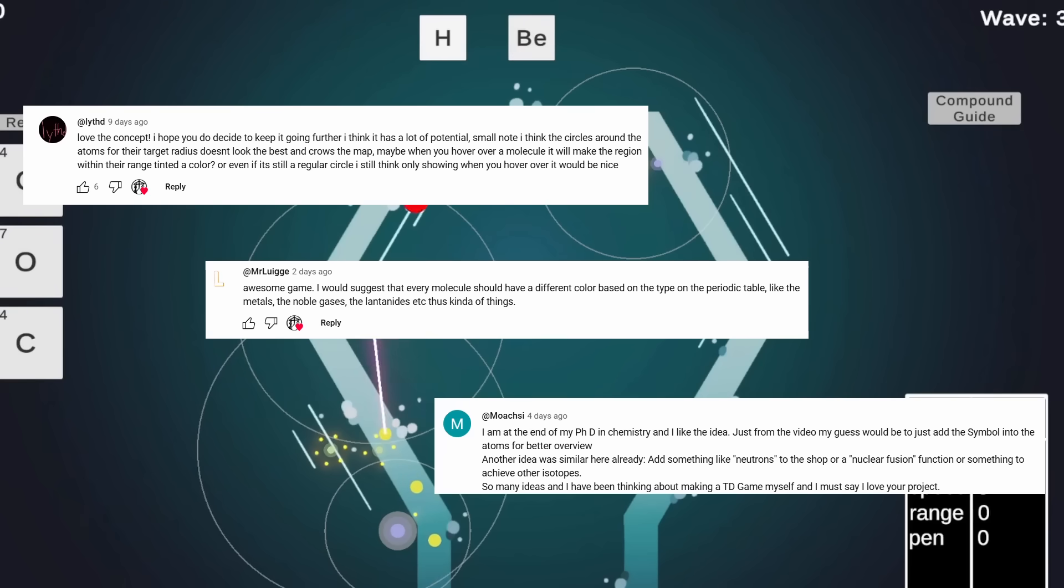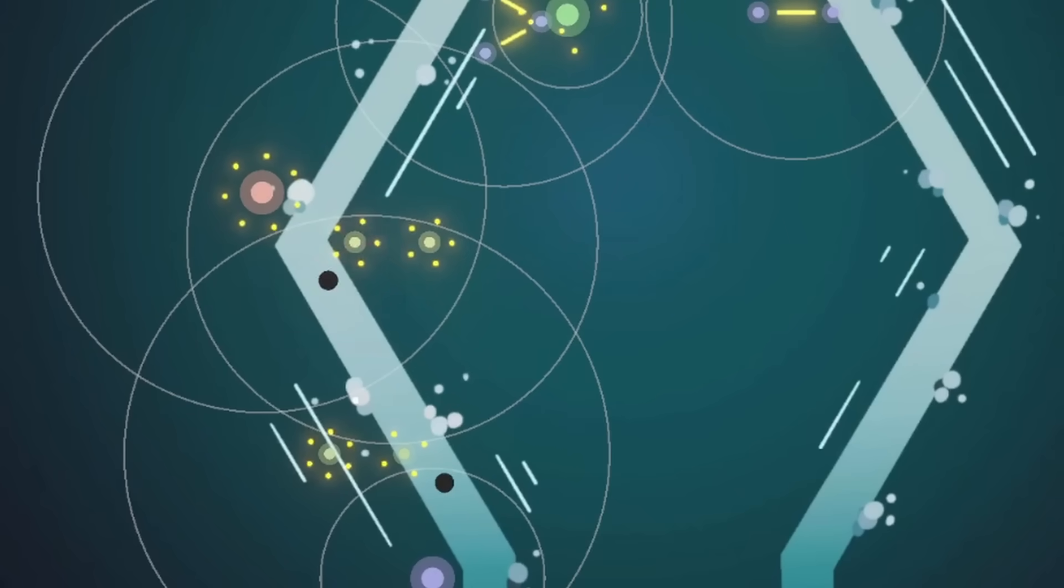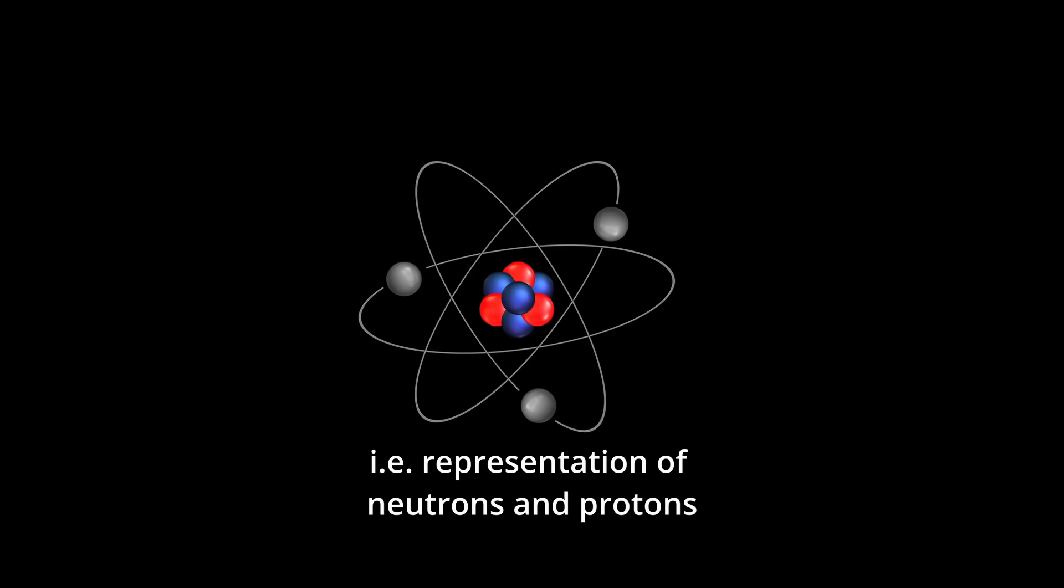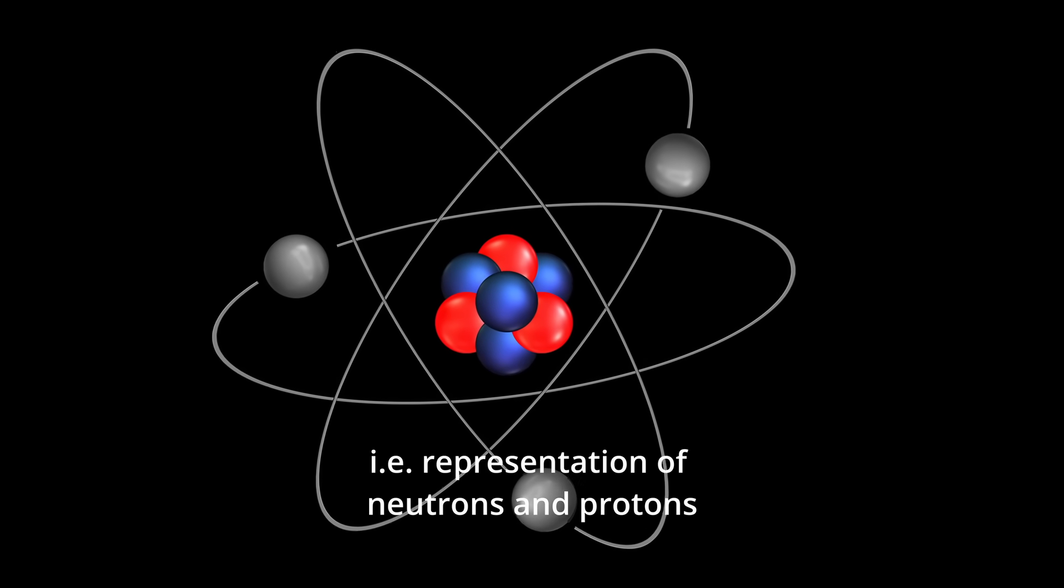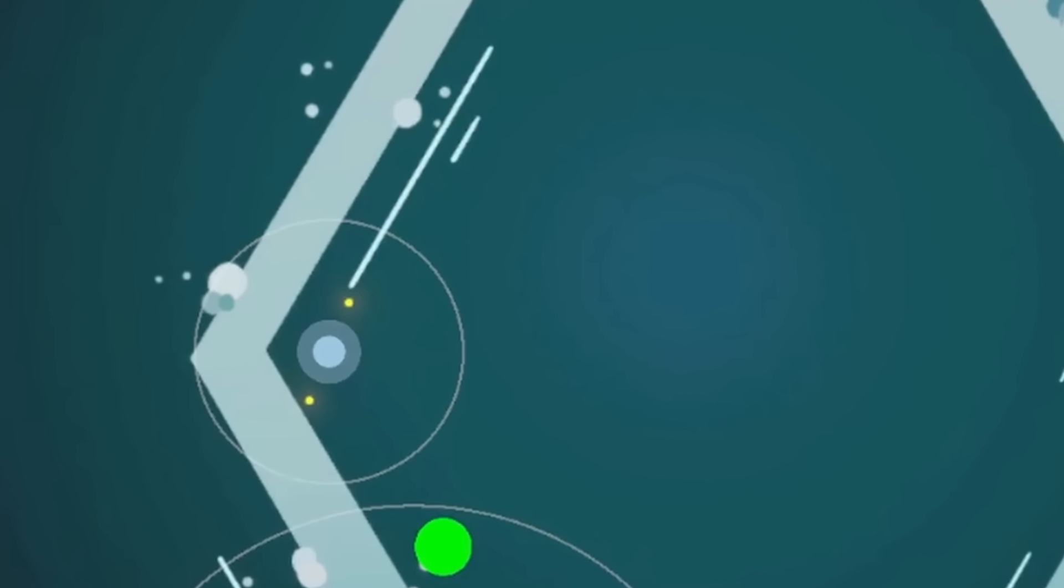A few people pointed out that the atoms don't have a strong visual identity, and I agree. While there is a slight color differential in place, it's not enough on its own. I'd like to have something that's more representative of the actual nucleus of the atom. I tried a couple different approaches.